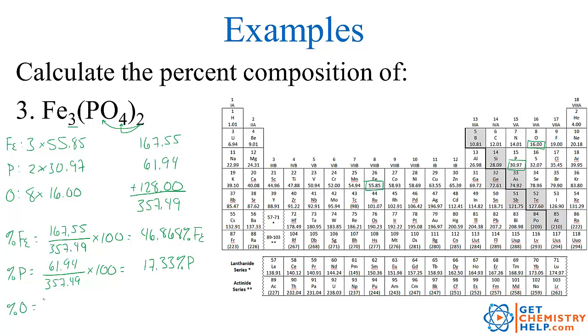And the percent oxygen, the total mass of oxygen was 128.00, divided by our total molar mass, 357.49, and once again times 100, leaves me 35.805% oxygen by mass.